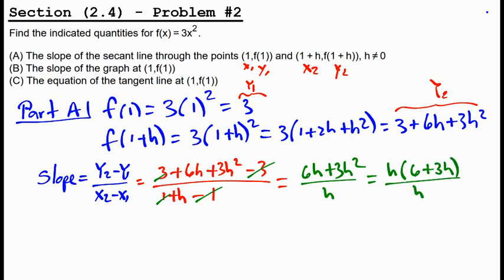And then that h cancels, and we're left with 6 plus 3h. And that is the answer to part A. Part B asks that we find the slope of the graph at a singular point, and that means we're talking about a tangent slope. And to find tangent slope, we need to use the derivative.